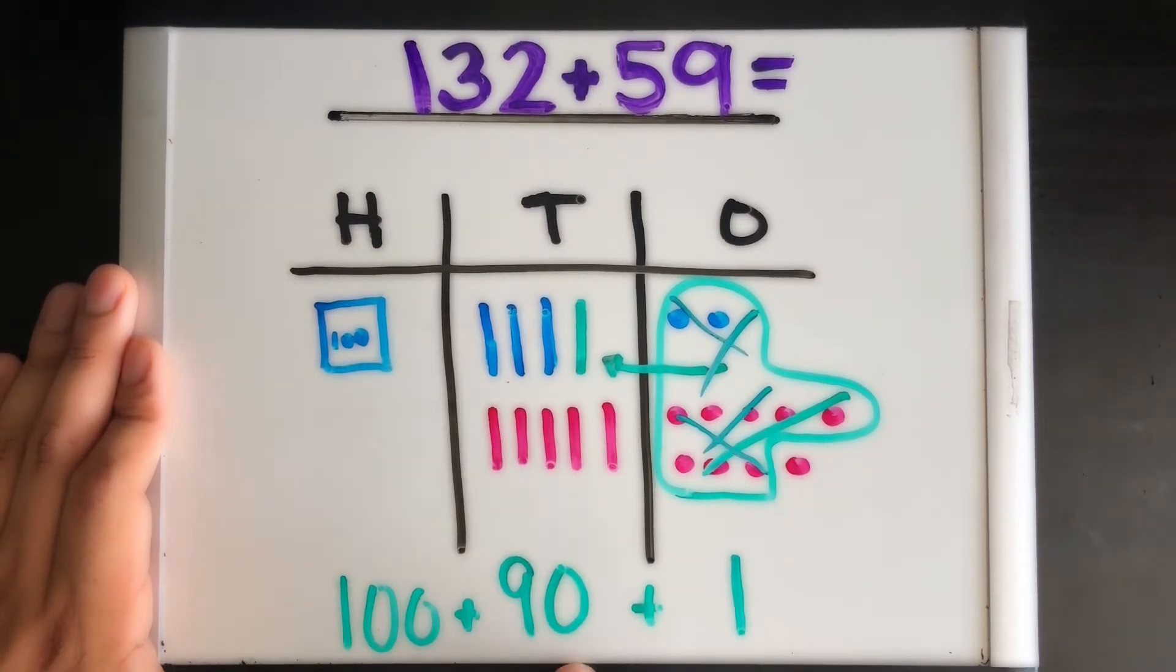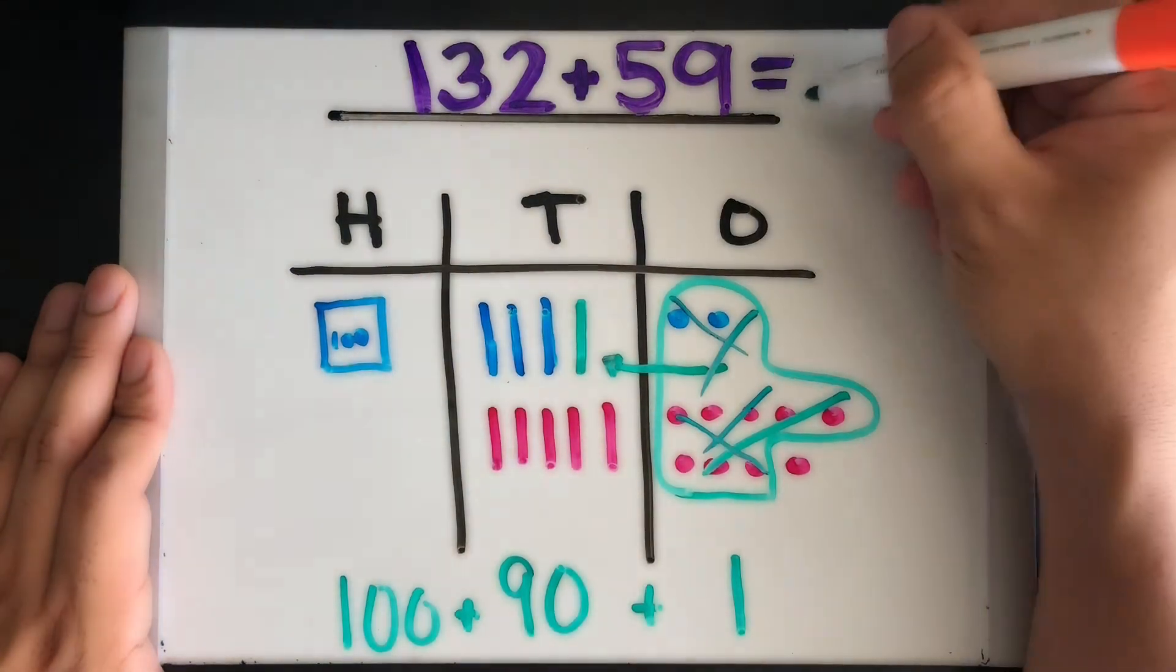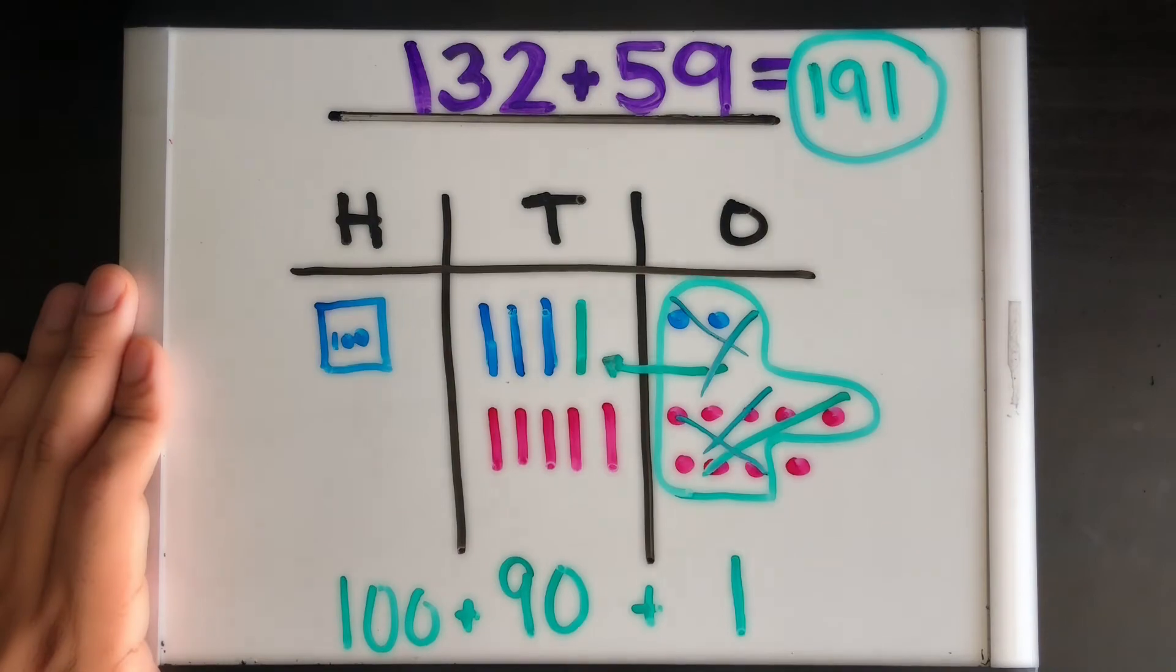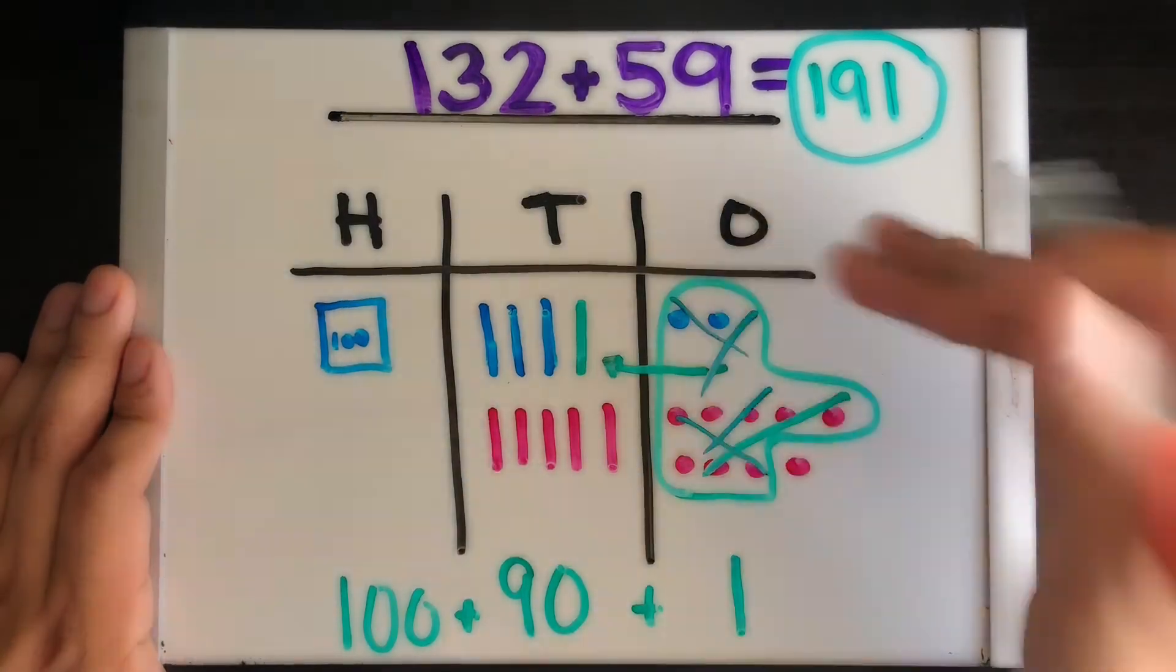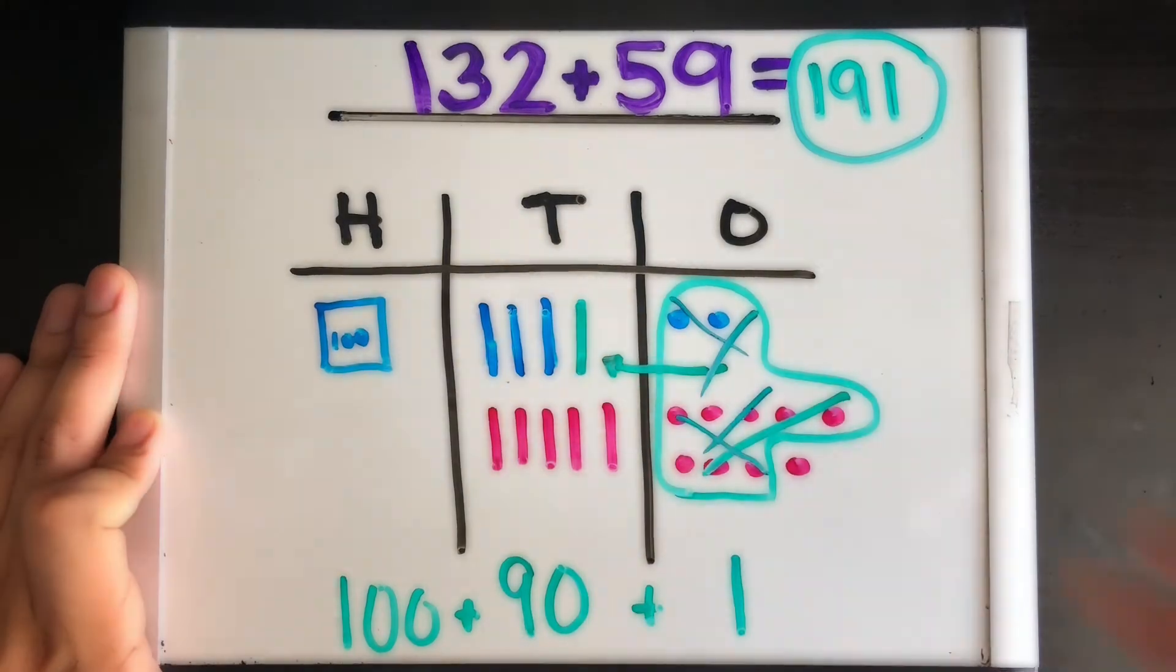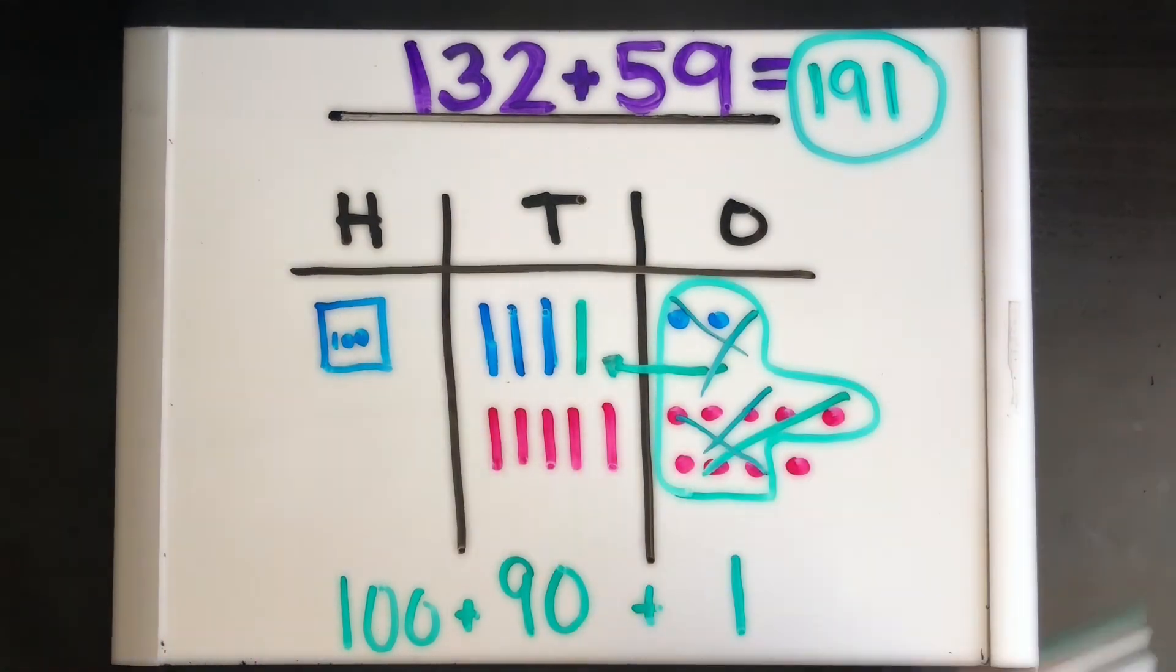And there is our answer. Perfect. Okay, that is adding using the place value strategy. Go home and practice, practice, practice. And about practice, I mean listen, we're talking about practice—not a game, not a game, not a game, we're talking about practice. And I promise you, it'll get easier. All right, thank you for watching, bye bye.